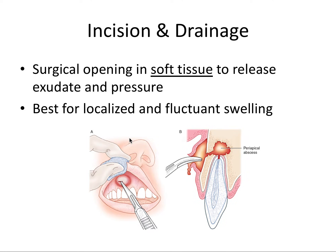Let's talk about incision and drainage, which is an important procedure in the surgical world. This procedure involves a surgical opening in soft tissue to release exudate and pressure, and it's best for localized and fluctuant swellings. In this image, there's a fluctuant mass filled presumably with pus and granulation tissue involving the soft tissue, and the operator is taking a number 11 blade and performing an incision to allow that exudate to drain out. The operator uses a hemostat to grab and tug out granulation tissue, and a drain of sterilized surgical material can be placed to allow pressure buildup to leak out over time.